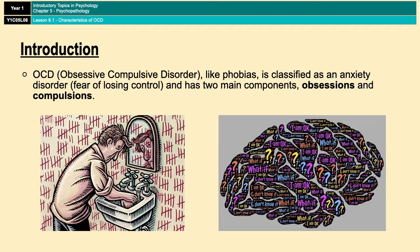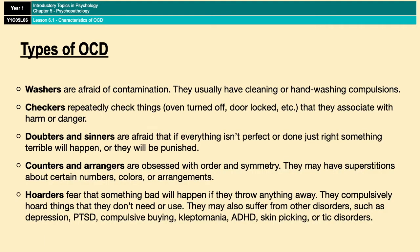OCD is an anxiety disorder where anxiety arises from both obsessions and compulsions. Compulsions are a response to the obsessions, and people suffering from OCD believe that the compulsions will reduce their anxiety in some way. There are quite a few different types of OCD and the main types are on the screen for you now.